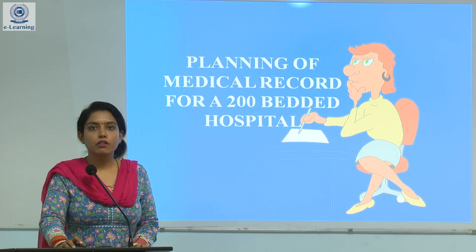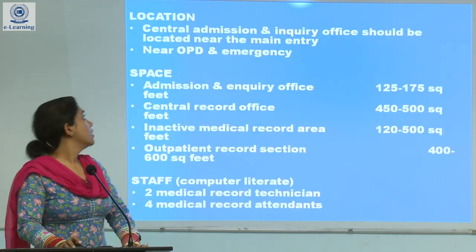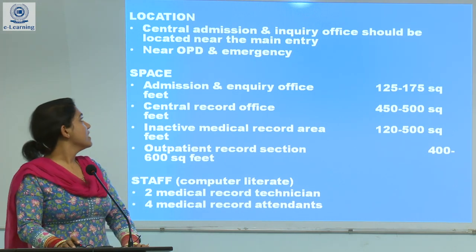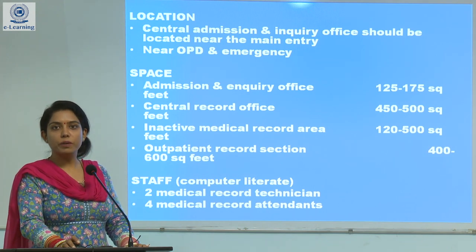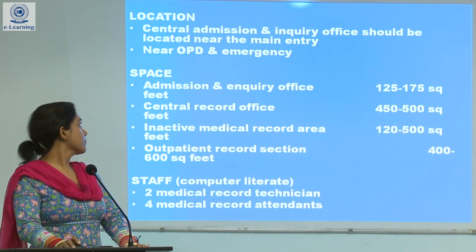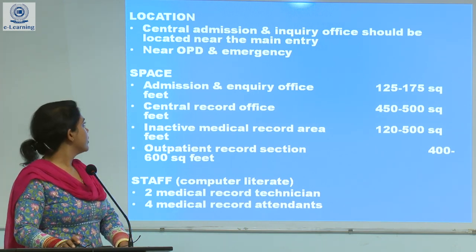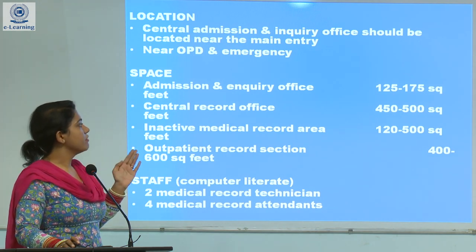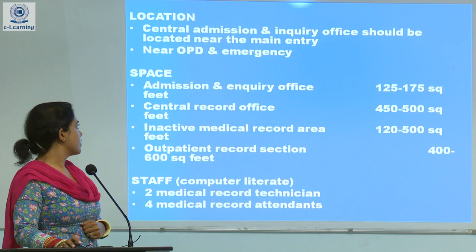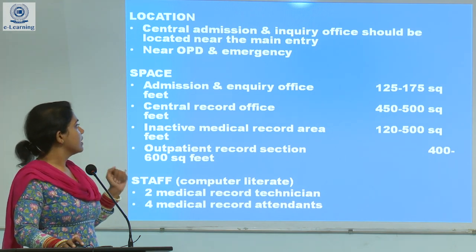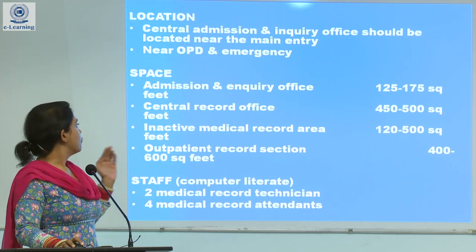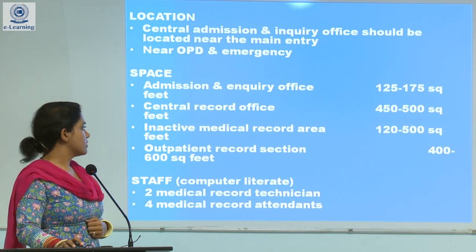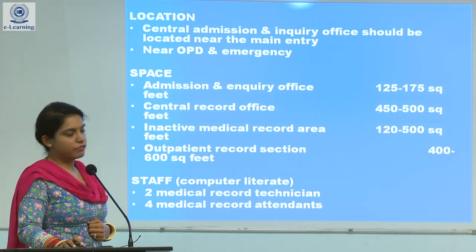Now, if we have to do the planning of medical records — for example, a 200-bedded hospital — the location of the central admission and inquiry office should be very near to the main entry, that is near the OPD and emergency. For space requirements: admission and inquiry office requires 125 to 175 square feet; central record office requires 450 to 500 square feet; medical record area requires 120 to 500 square feet; and outpatient record section requires 400 to 600 square feet.